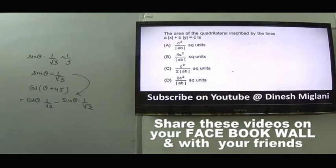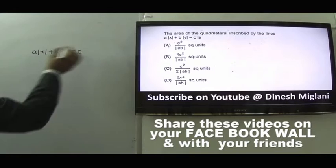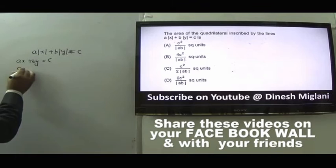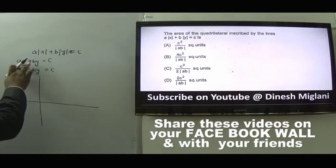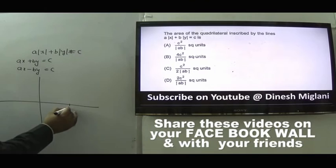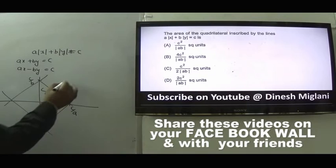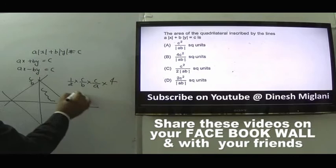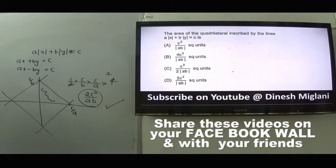Question 42: Area of quadrilateral inscribed by the lines |ax| + |by| = c. The four lines are ±ax ± by = c. Setting x = 0 gives y = c/b; y = 0 gives x = c/a. Each of four triangles has area = ½×(c/a)×(c/b). Total quadrilateral area = 4 × ½ × c²/(ab) = 2c²/(ab). Answer is D.